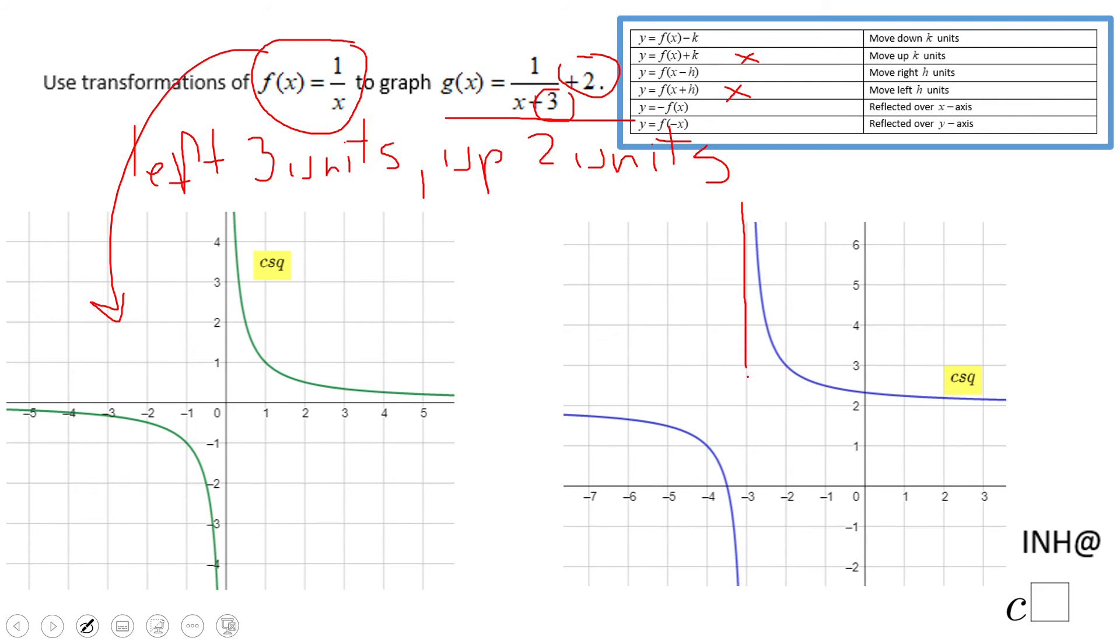Another way to see a rational function: look at here. This is the vertical asymptote x equals negative 3, right? If you notice what the g of x says. And this is the horizontal asymptote y equals 2.